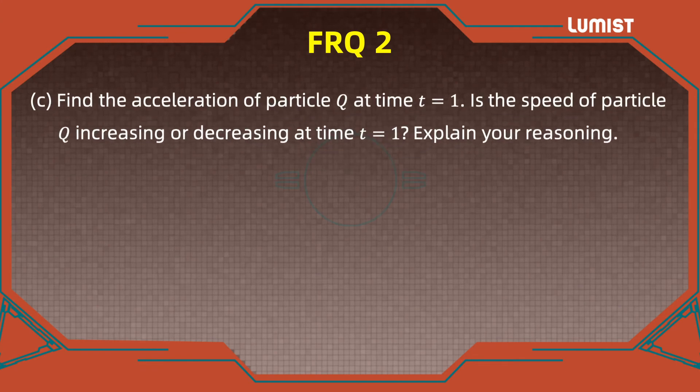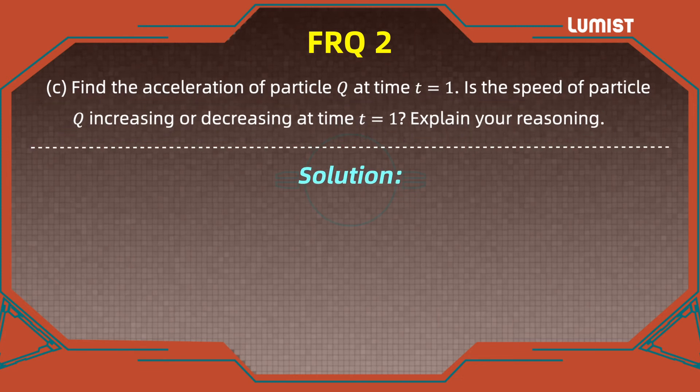For part C, we must find the acceleration of Q, the particle Q, when t equals 1. To do that, we just have to remember that the acceleration of particle Q at t is just the derivative of the velocity of that particle at t.